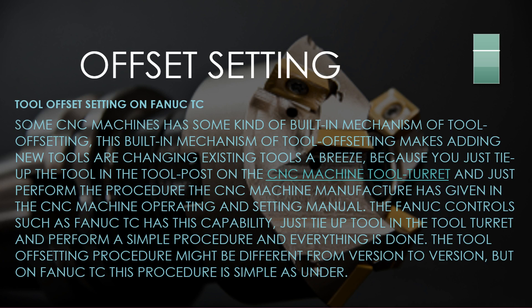Some CNC machines have a built-in mechanism for tool offsetting. This makes adding new tools or changing existing tools a breeze, because you simply mount the tool in the tool post on the CNC machine tool turret and perform the procedure given in the CNC machine operating and setting manual. FANUC controls such as FANUC TC have this capability — just mount the tool in the tool turret and perform a simple procedure. The tool offsetting procedure might differ from version to version, but on FANUC TC this procedure is simple.